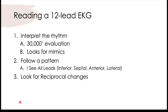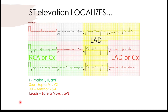Remember your three basic steps for reading a 12-lead EKG. First off, interpret the rhythm — that gives you a 30,000-foot view of the patient and the clinical picture. It helps you look for mimics, which will be handy in this lecture. Follow a pattern: I see all leads — inferior, septal, anterior, lateral — and also look for reciprocal changes. Most 12-leads are laid out with 2, 3, and AVF being the inferior leads, V1 through V4 being anterior, and V5, V6, AVL, and lead 1 being your lateral leads.